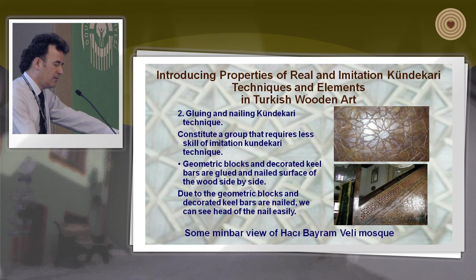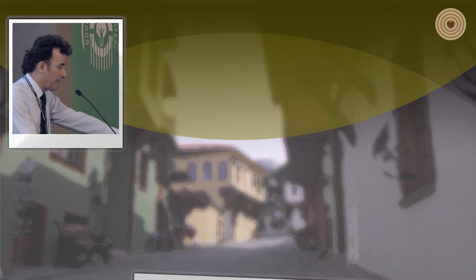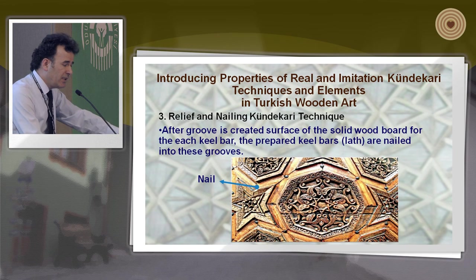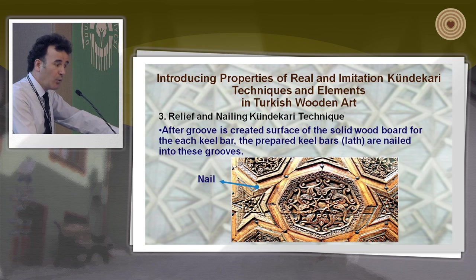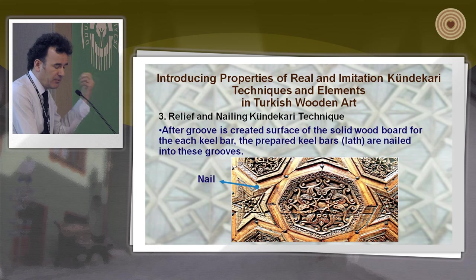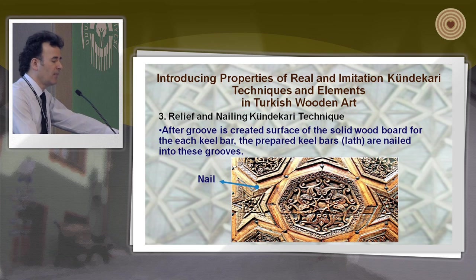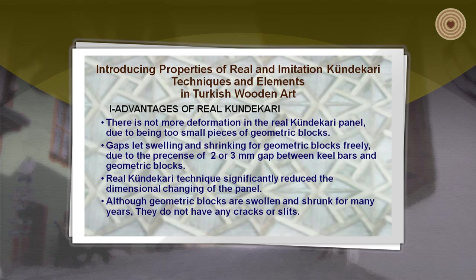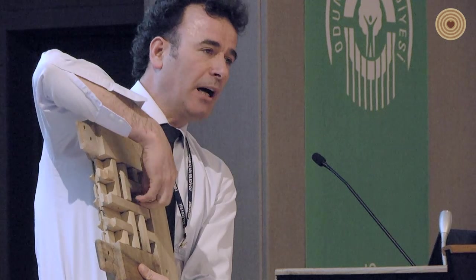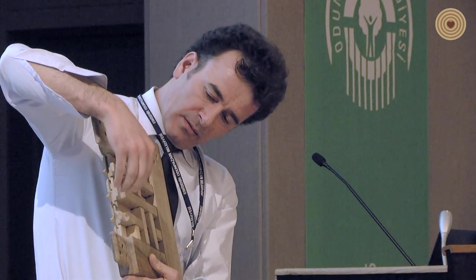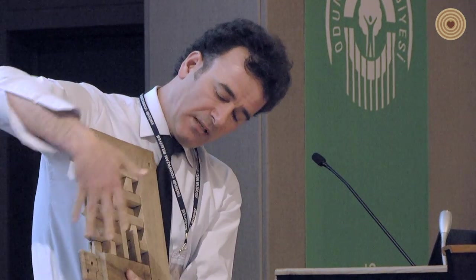This one is a pulpit example with added detail. The last type is relief and nailing Kundakari technique. After a groove is created on the surface of the solid wood board, the prepared kill bars are nailed into this groove. You can see the solid wood — this is only one piece with one nail. The nail transfers load from the left element to the right element.